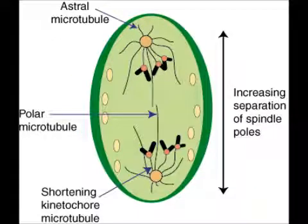Anaphase begins after the chromosomes are separated into chromatids. During anaphase, the microtubules connected to the chromatids, now chromosomes, shorten, effectively pulling the chromosomes to opposite poles.